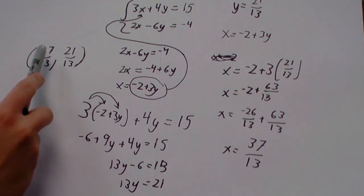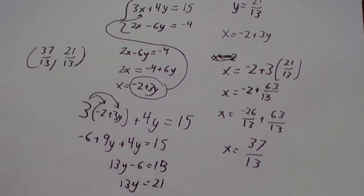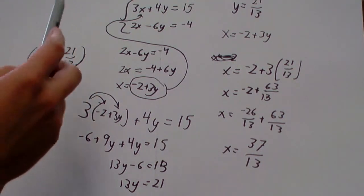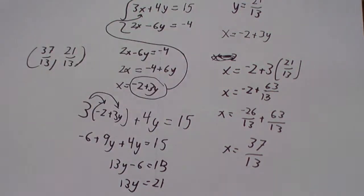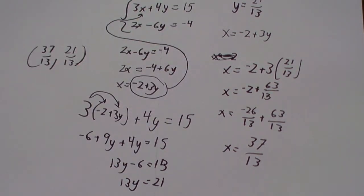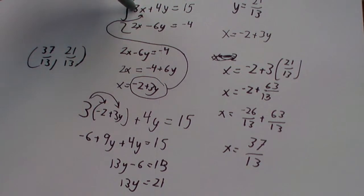Alright, now we can check our work, because checking work is always good to do, by plugging these values into the original equations. So, in this case, we've got 3 times 37 over 13, which is 111 over 13.